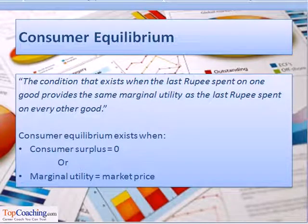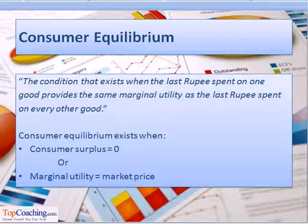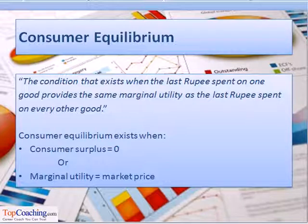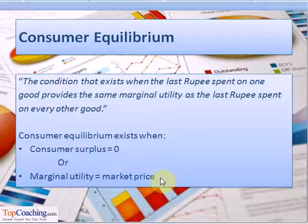Another related term is consumer equilibrium. Consumer equilibrium is the condition that exists when the last rupee spent on one good or service provides the same marginal utility as the last rupee spent on every other good. In consumer equilibrium, income is allocated between the purchase of different goods such that the level of utility cannot be increased — that is, utility maximization has been achieved. A consumer will be in equilibrium when the consumer surplus equals zero, or the marginal utility of the commodity equals the commodity's market price.